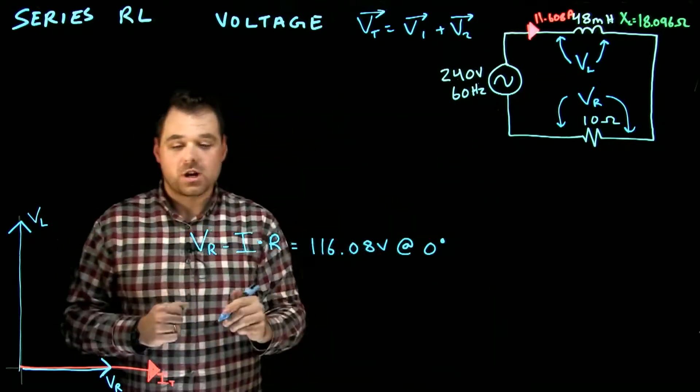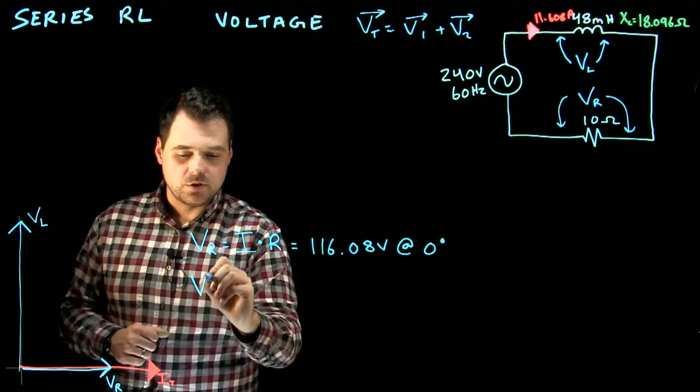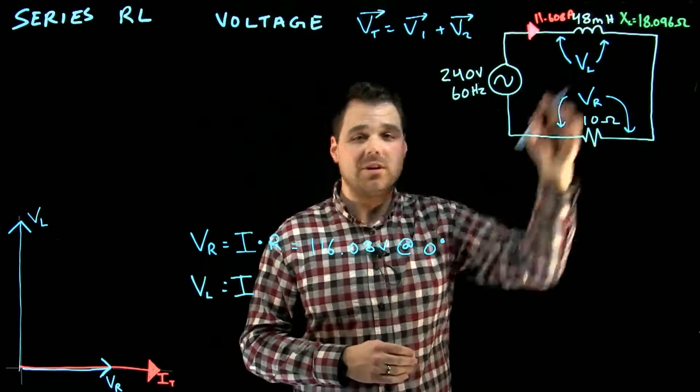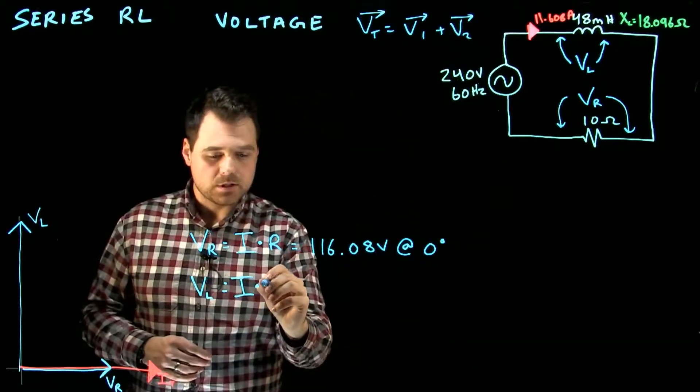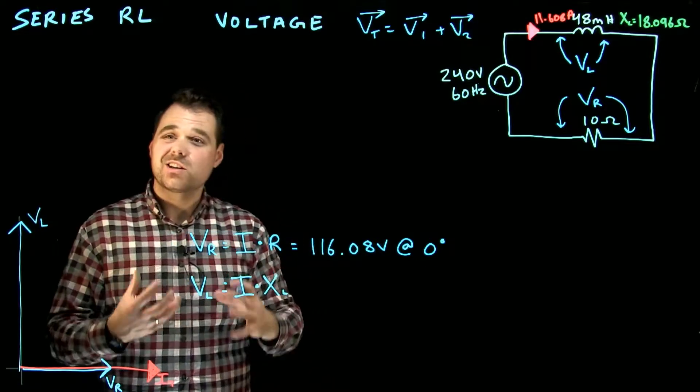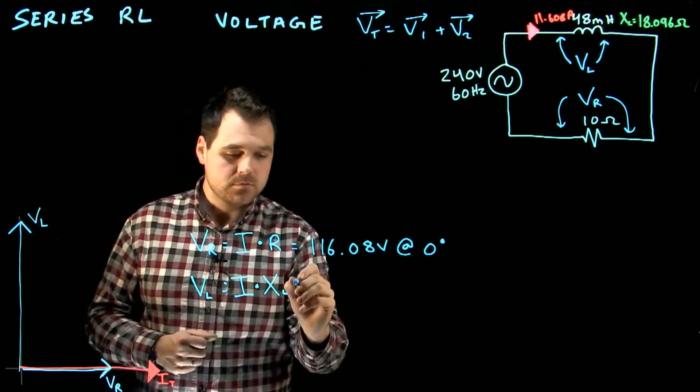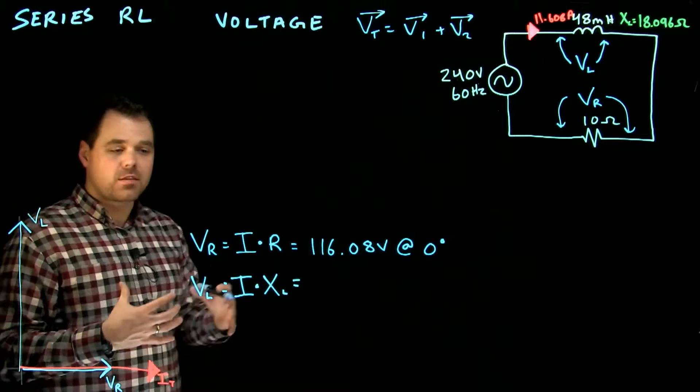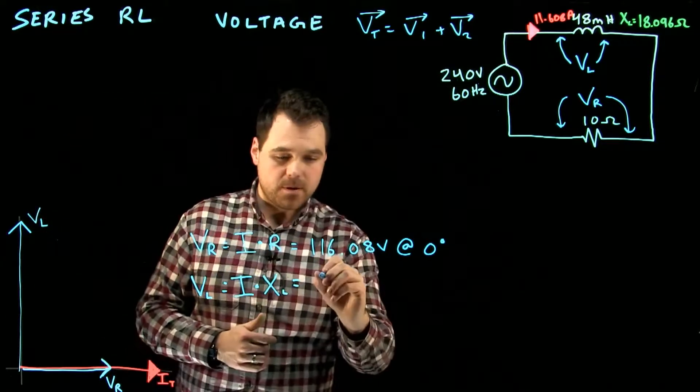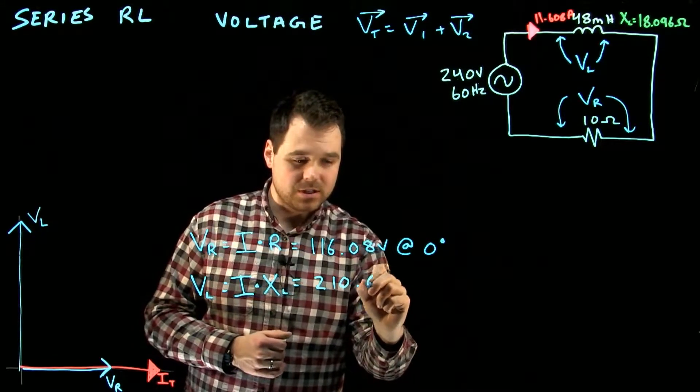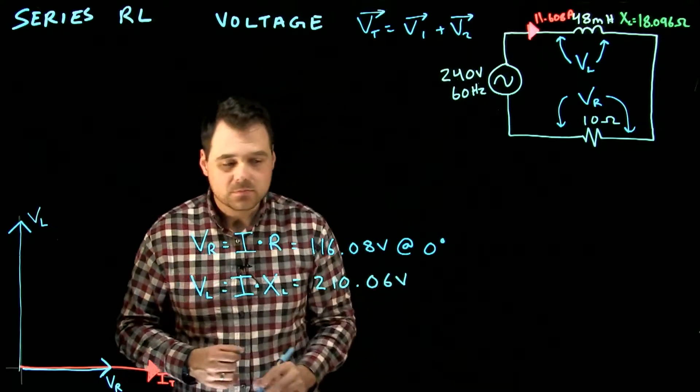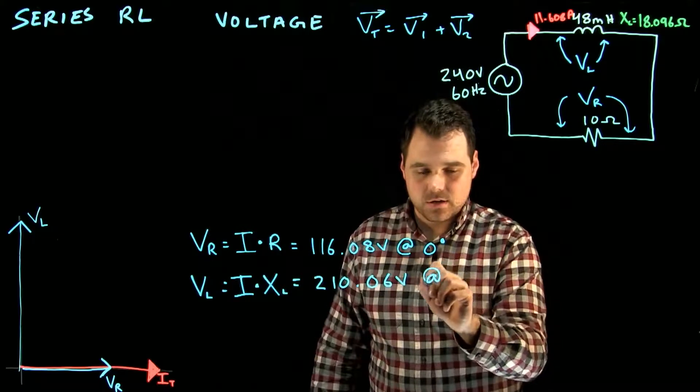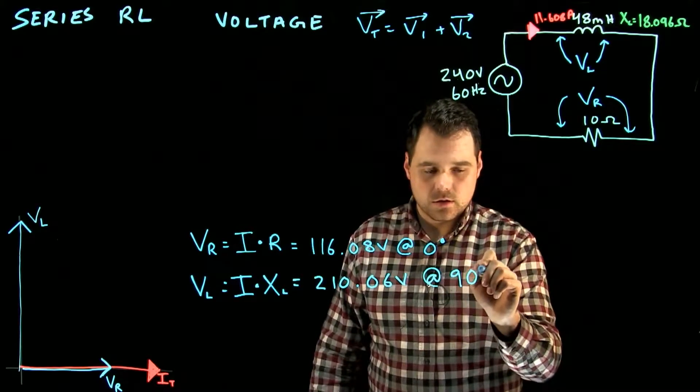Our voltage across our inductor, we're going to do the same thing. We're going to say the voltage of our inductor is going to be the current, specifically the current flowing through the inductor, times XL or the inductive reactance of the inductor. So we do that math and with the inductor we come up with about 210.06 volts, and as we discussed, this voltage is actually going to be at that 90 degree difference.